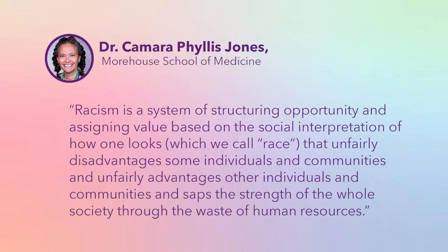In the United States, systemic racism is a way of thinking about the residual effects of our history of removing Native Americans from their land, enslaving people of African descent, and segregating people based on their skin color. Although these are forms of explicit racism that have now ended, there continues to be inequity between racial groups in the United States. According to Dr. Camara Phyllis Jones of the Morehouse School of Medicine, racism is a system of structuring opportunity and assigning value based on the social interpretation of how one looks — which we call race — that unfairly disadvantages some individuals and communities, and unfairly advantages other individuals and communities, and saps the strength of the whole society through the waste of human resources.